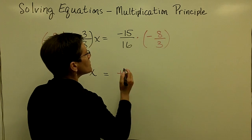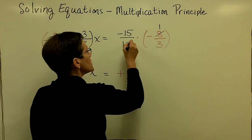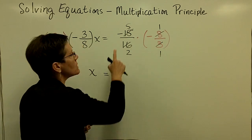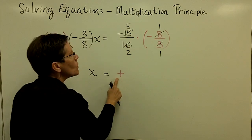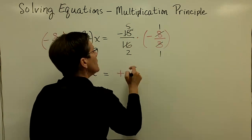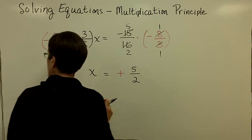Let's go ahead and reduce this. 8 goes into here once and into here twice. And 3 goes into here once and into there 5 times. I'm ignoring the negative signs because I've already taken care of them right here. In the numerator, I have 5 times 1, which is 5. In the denominator, 2 times 1, which is 2.